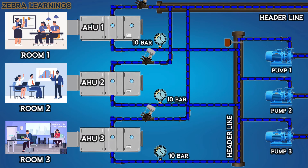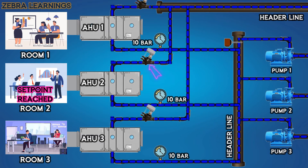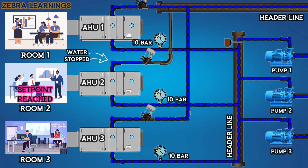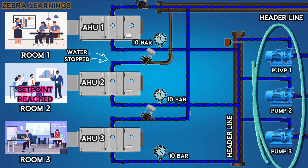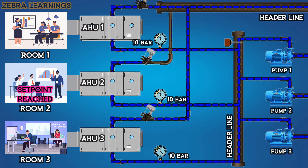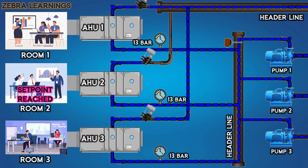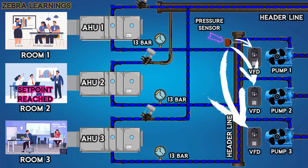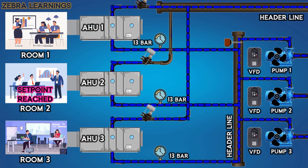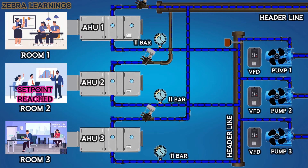Now, if the temperature of a room reaches the set point, the PICV will close in the AHU of that room. As a 2-way valve is installed, the water going to the AHU stops. As the pumps continue to send water even after the valve is closed, the pressure in the pipeline increases. When the pressure increases, the pressure sensor installed in the pipeline sends a signal to the VFD of the pump. Then the VFD will reduce the speed of the pump according to the pressure and maintain the pressure of 10 bars in the pipeline.